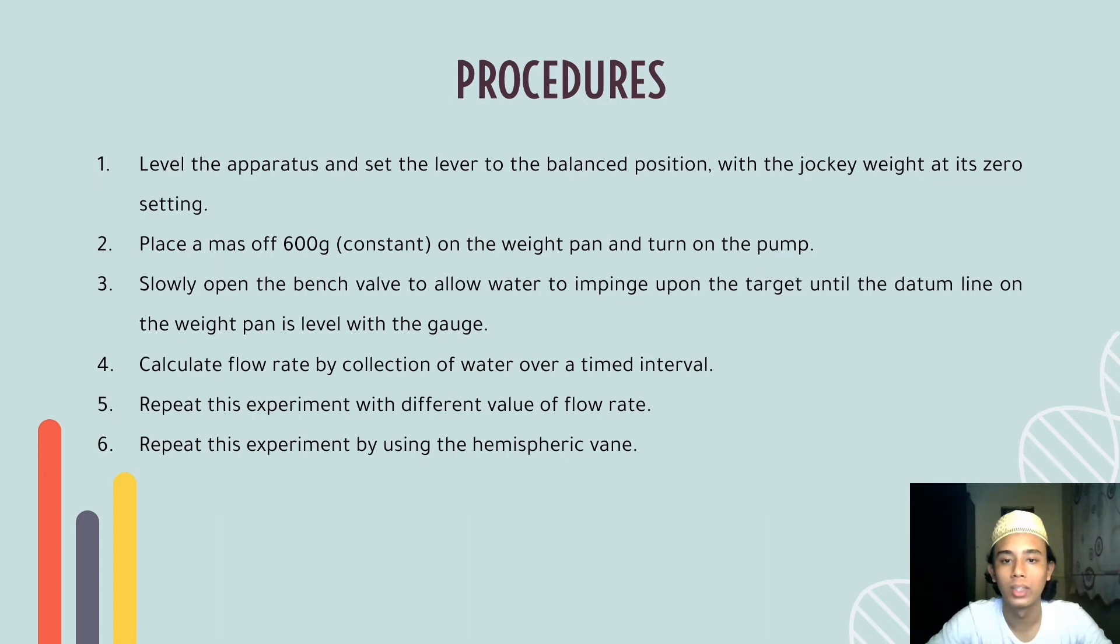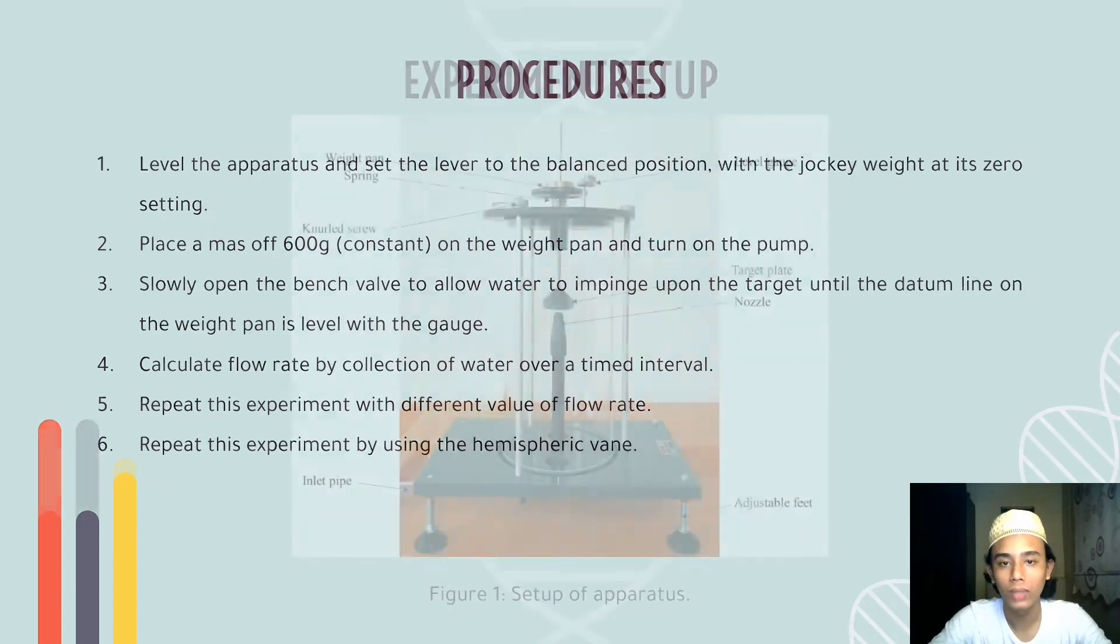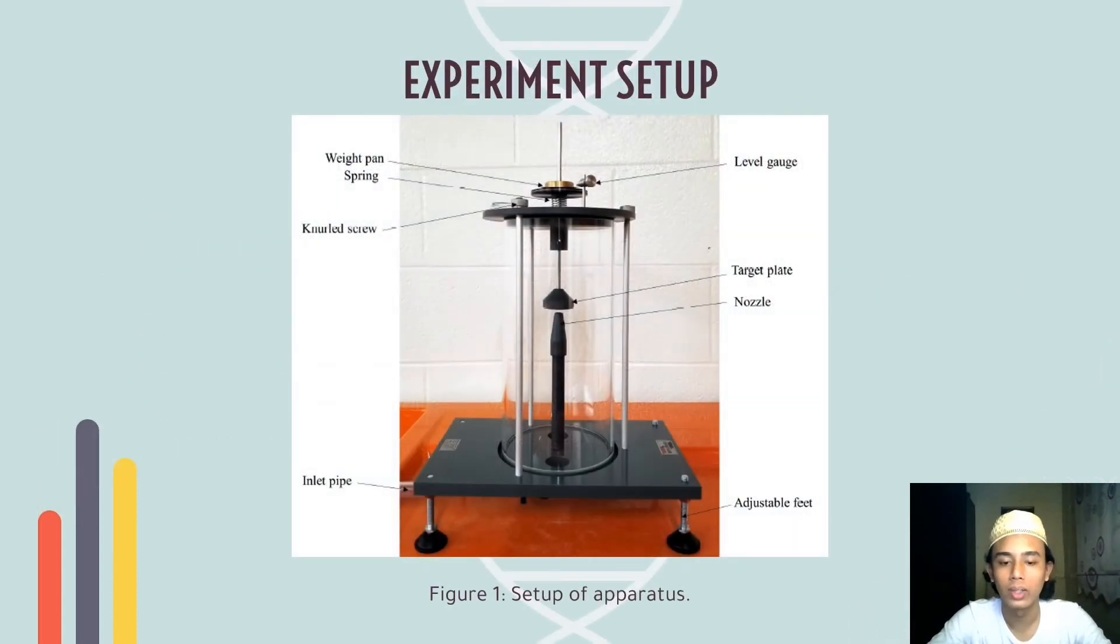Let's move on to the procedures. There are six steps that need to be repeated because we will repeat this experiment using the flat vane and also a hemispheric vane. The figure here shows the setup of apparatus. The apparatus needed are level gauge, target plate, nozzle, adjustable plate, inlet pipe, vernier screw, weight pan and spring.